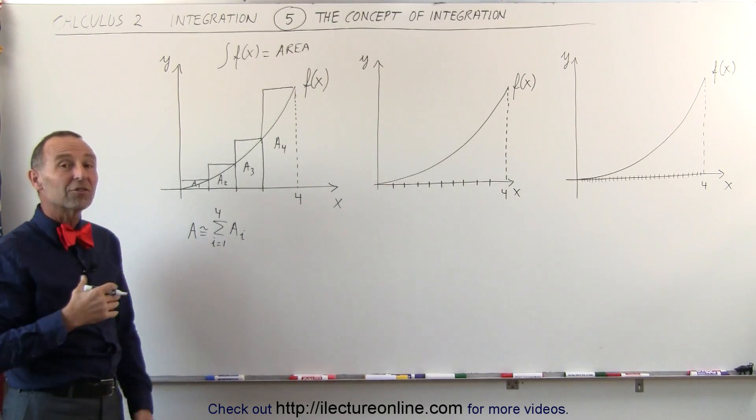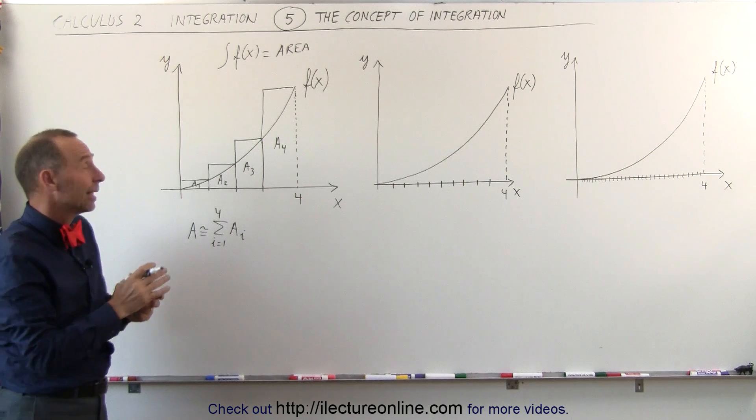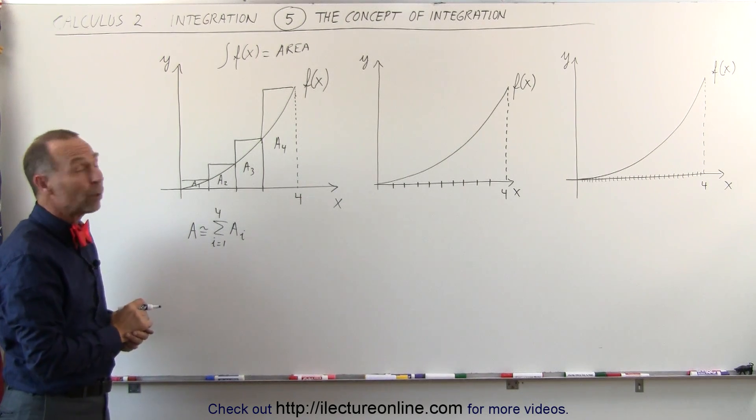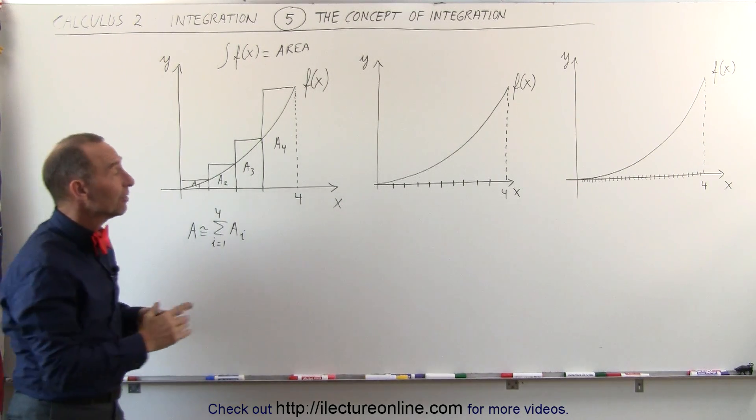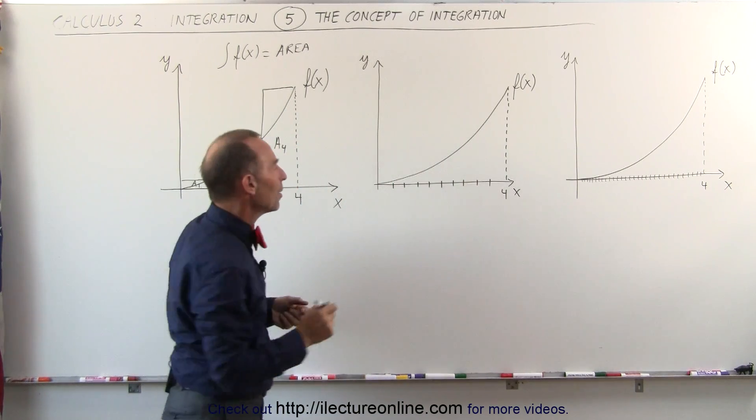Of course, that's quite unsatisfactory, because I do have quite a bit more area than I should underneath the curve. Well, what I can do to remedy that is I can have more sections, make them thinner, and do the same thing.